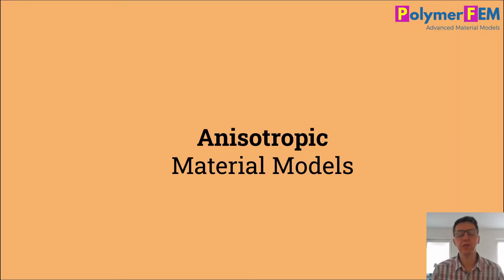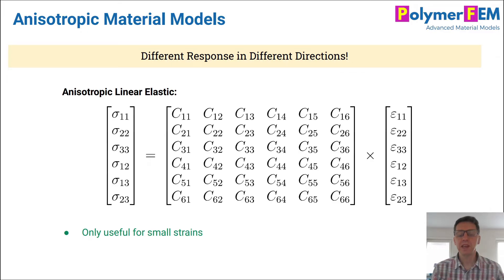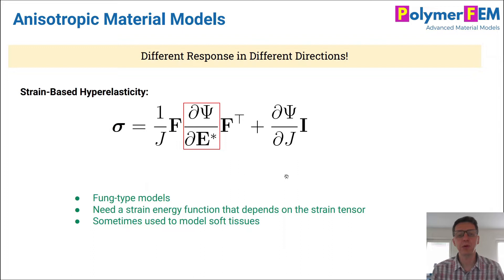Let's now focus on anisotropic material models. The most basic anisotropic material model is an anisotropic linear elastic material model where the stress is a function of the strains in this way. There's a linear dependence between stress and strain and this is only useful for small strains. There are of course some symmetries that go into this equation here. But that's basically it, very simple material model.